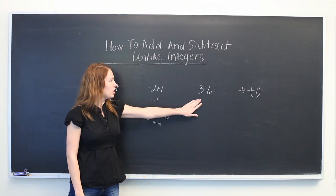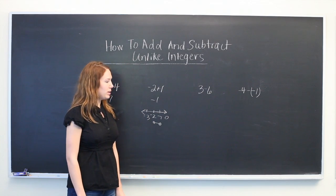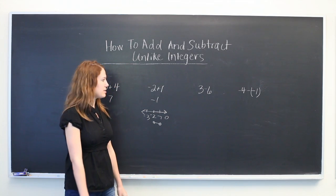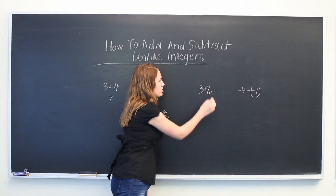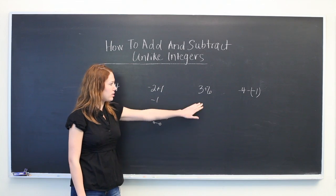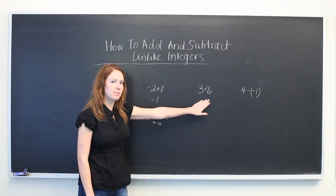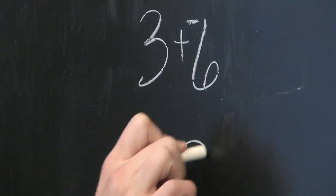Now onto subtraction. For 3-6, we're going to flip the minus sign to a plus and change the positive 6 to a negative 6. We're going to say 3+(-6), which will give us a value of -3.